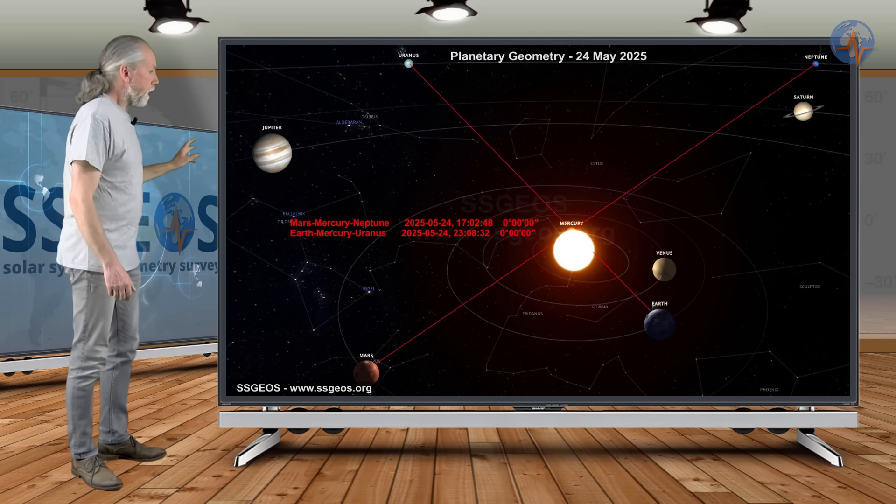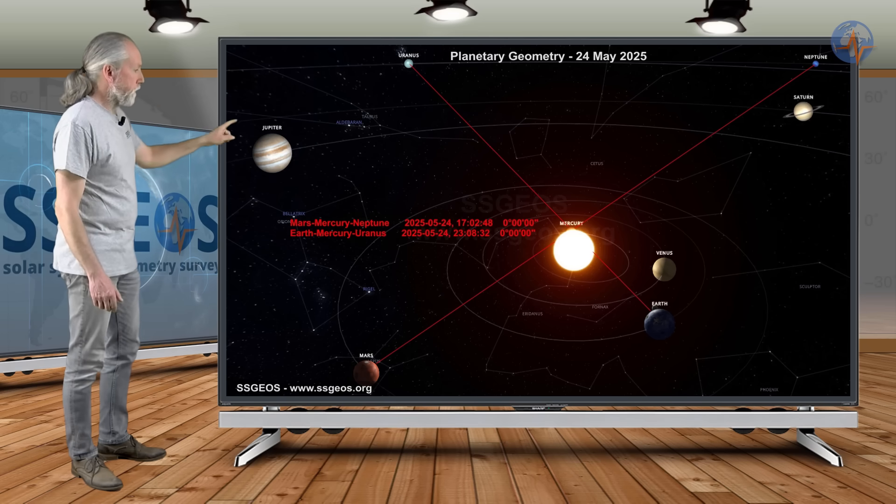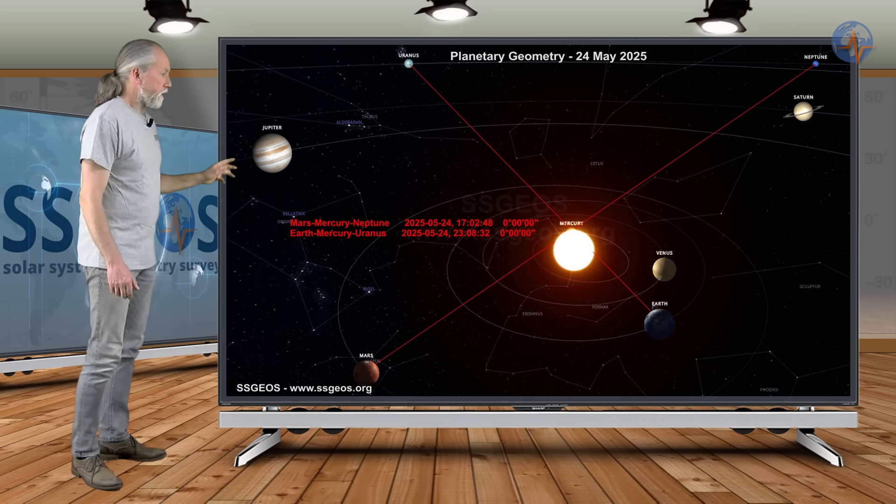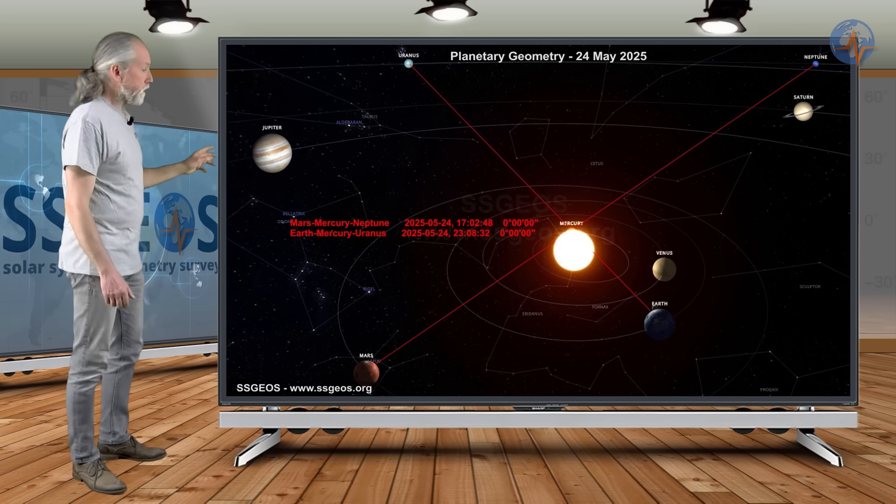We see that in the solar system. Mars-Mercury-Neptune and Earth-Mercury and Uranus in a conjunction. This is a tight convergence today, later today. And we could see a seismic response as a result.